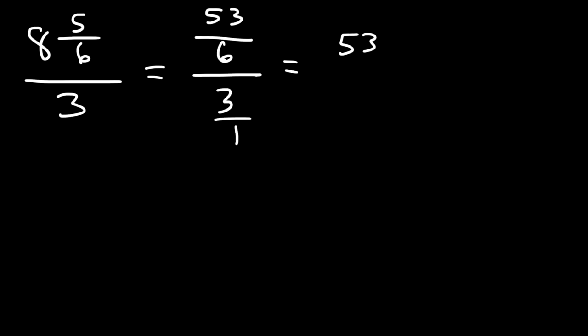For the last example, I'm going to try to get the same answer using two different methods as opposed to one. So let's get the answer using the first method that we've been using so far. So let's convert the mixed number into an improper fraction. 8 times 6 is 48, plus 5, that's going to be 53.